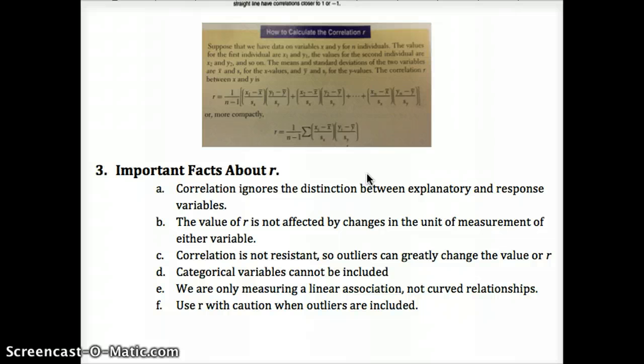Correlation ignores the distinction between explanatory and response variables. If we switch them, we would still have a correlation. The value of r is not affected by the changes in the unit of measurement of either variable. If we went from centimeters to meters, pounds to newtons. Correlation is not resistant. Outliers can greatly change the value of r in the same way that outliers change the value of the mean and the standard deviation of a distribution.